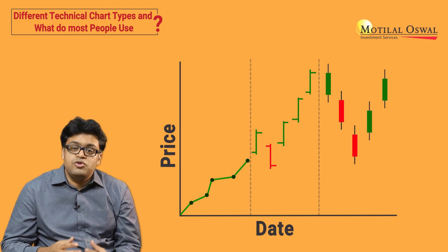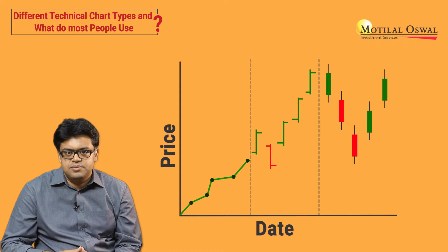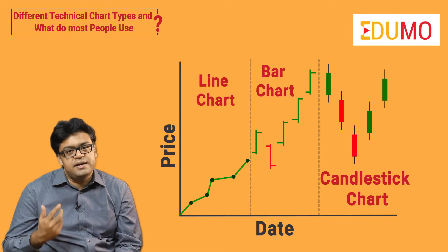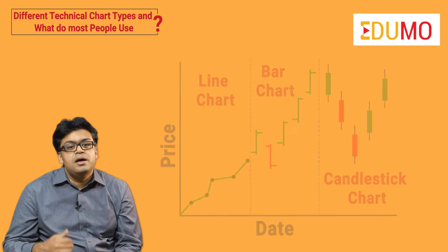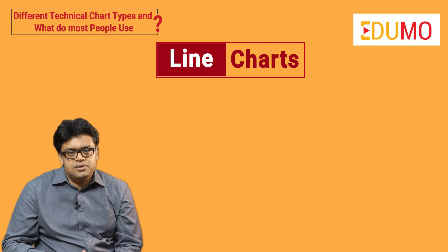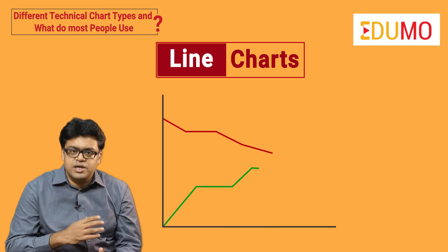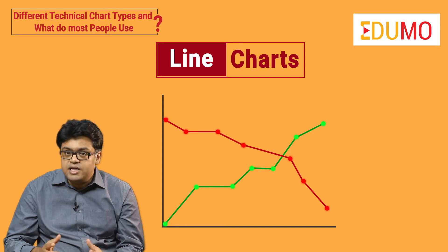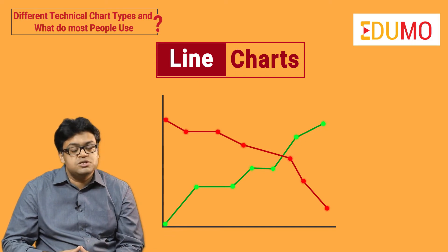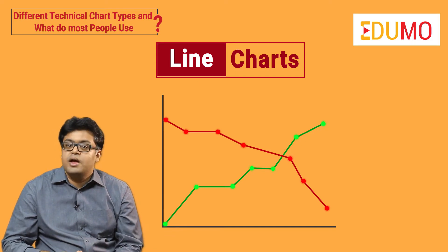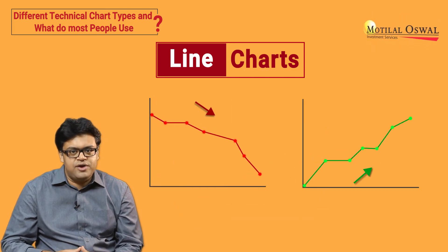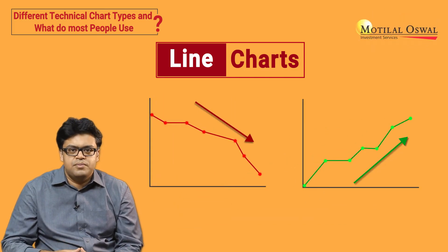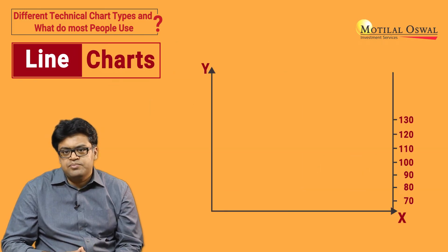Let us discuss the three broadly used technical charts: line charts, bar charts, and candlestick charts. A single line which connects stock prices is known as a line chart. It is the most simple type of chart and is often used to visualize a trend in data over intervals of time.